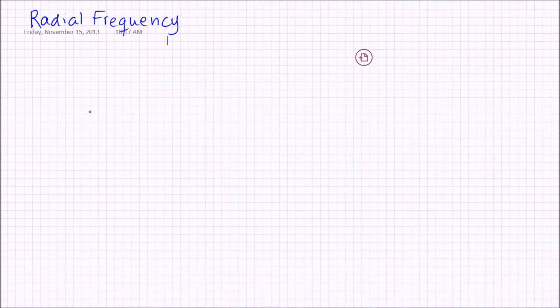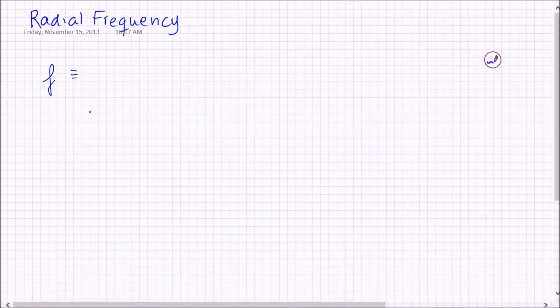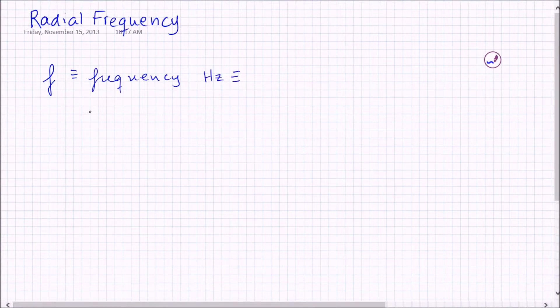So the first definition that you're probably most familiar with is written as F, and that's typically just called the frequency. And that has units of hertz or cycles per second.